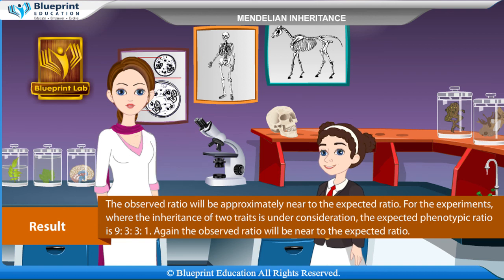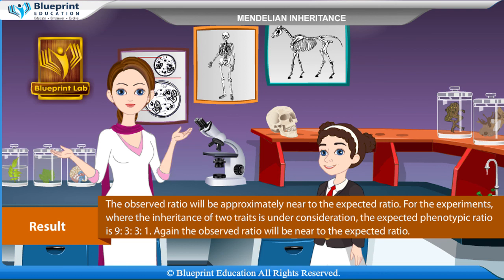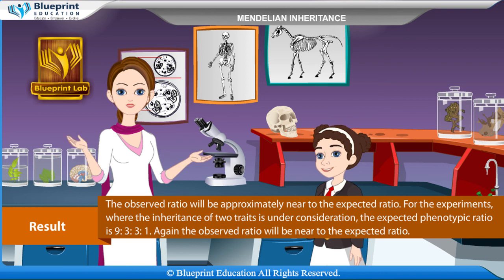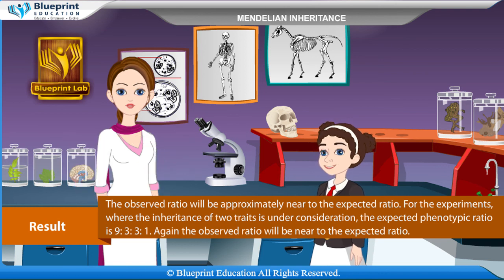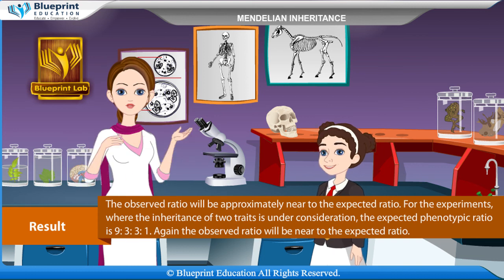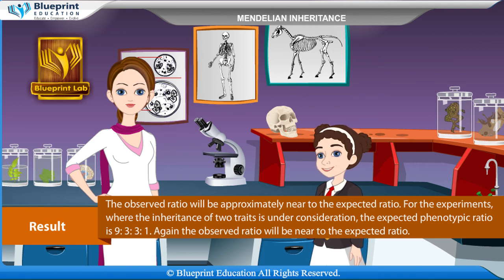For experiments where the inheritance of two traits is under consideration, the expected phenotypic ratio is 9:3:3:1. Again, the observed ratio will be near to the expected ratio. Thank you, ma'am. You have given great knowledge through this experiment.